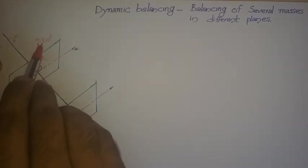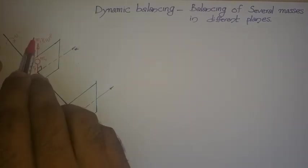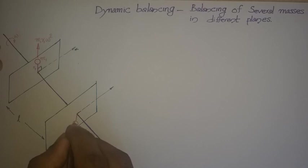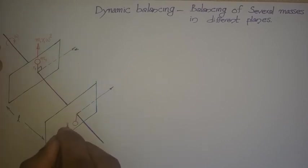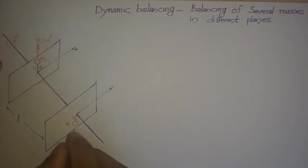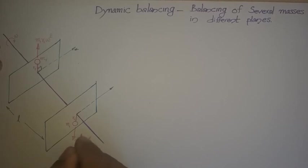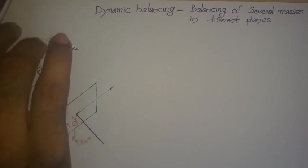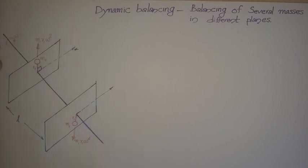If m1 r1 omega squared is acting vertically upward, you can cancel it out by placing a mass in the opposite direction. Suppose this is also the same mass m1 at the same radial distance r1, producing a centrifugal force of m1 r1 omega squared in the vertically downward direction, cancelling out the original force so the net force is zero.